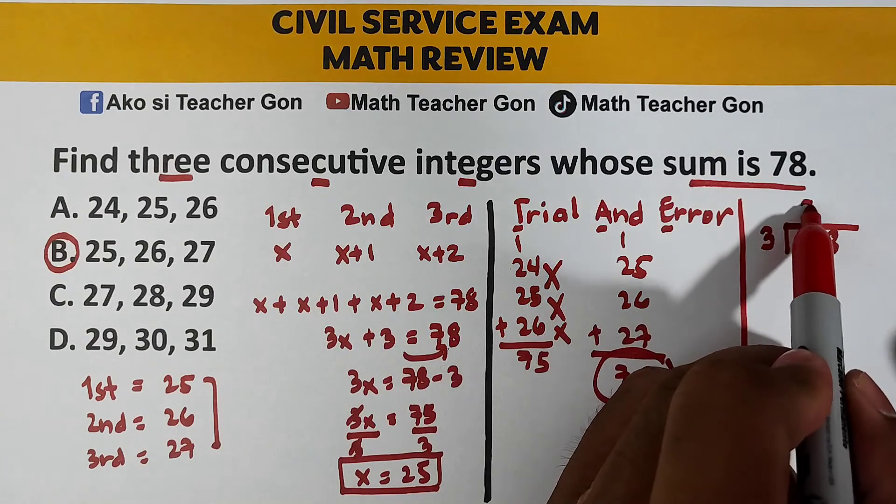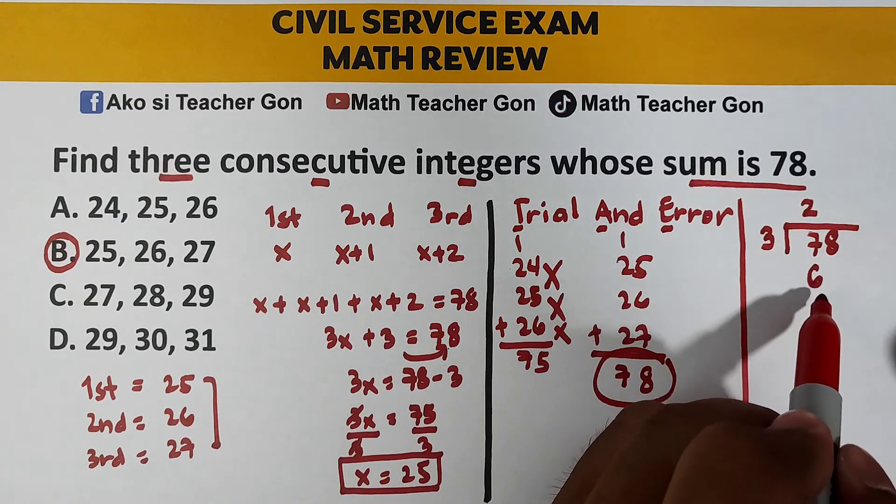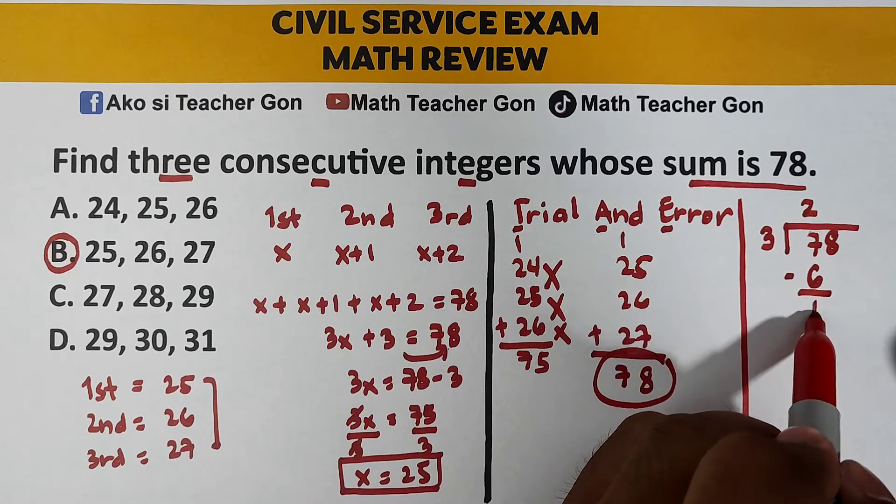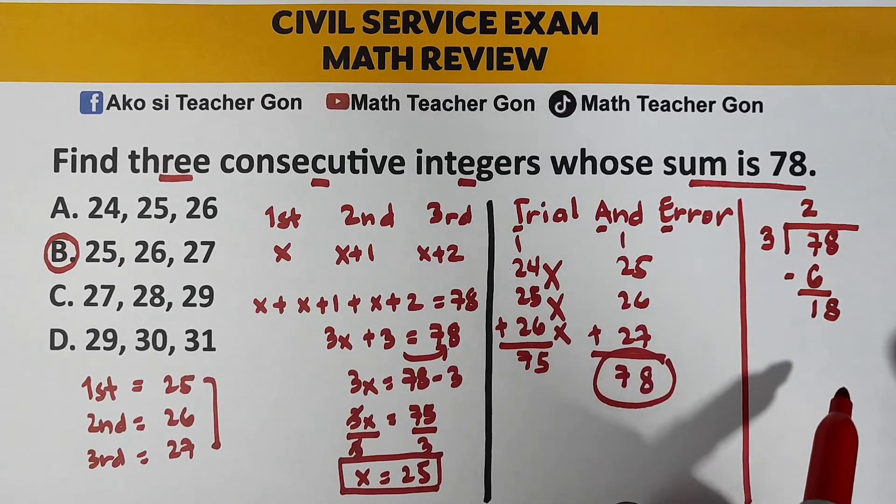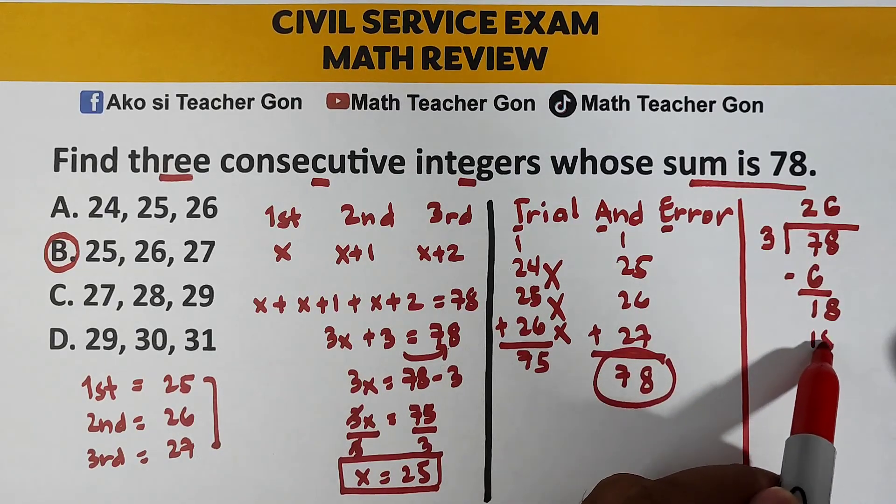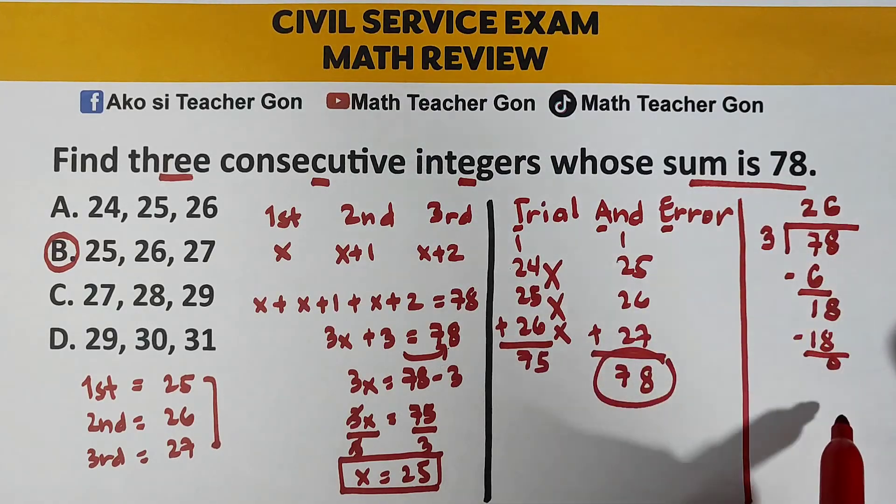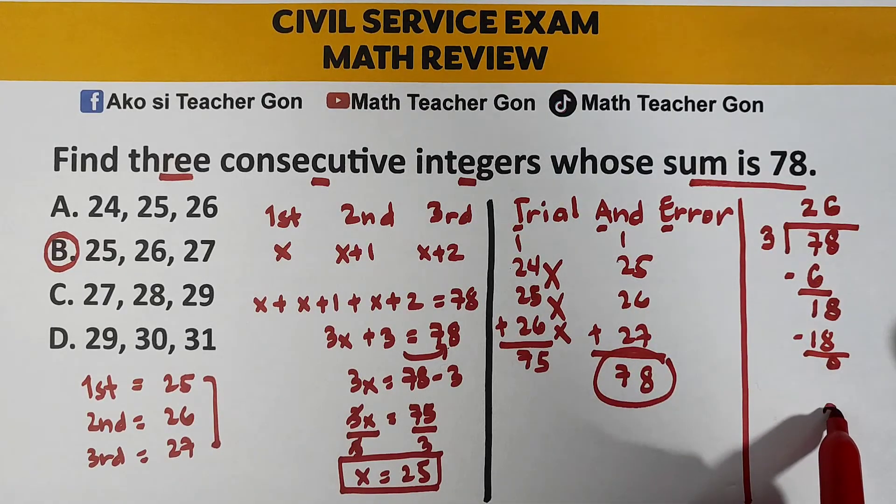7 divided by 3 is 2. 2 times 3 is 6. Subtract, 1 and 18. 18 divided by 3 is 6. 6 times 3 is 18. As you can see, 0 na yan. Ngayon, para sa inyong 26. Ibig sabihin nyan